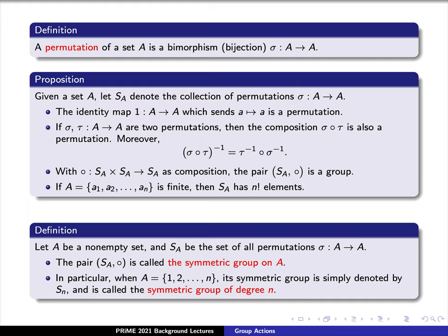We give a few definitions. Say that A is a non-empty set and let S sub A denote the set of all permutations sigma from A to itself. The pair S sub A along with composition circle is called the symmetric group on A. In particular, when A simply consists of the integers 1, 2, through n, its symmetric group is simply denoted by S sub n and is called the symmetric group of degree n.